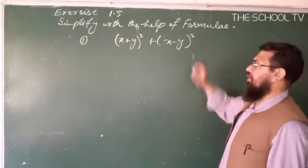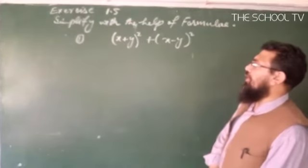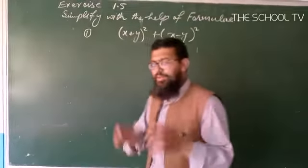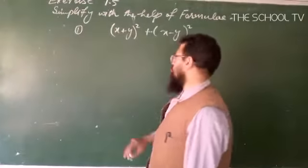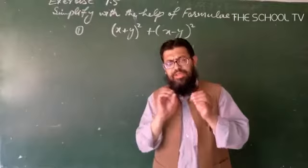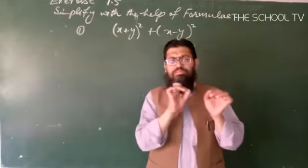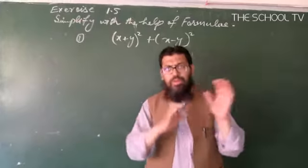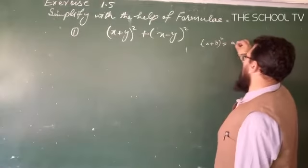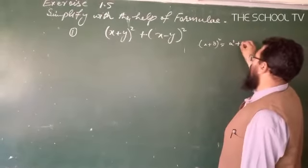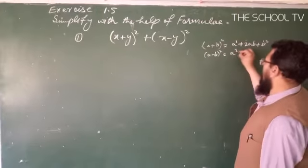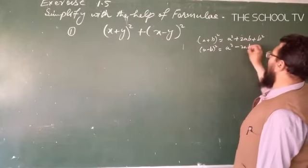We need to simplify this expression. To simplify it, we will use a formula. We have some formulas: (a + b)² = a² + 2ab + b², and (a - b)² = a² - 2ab + b².